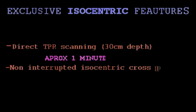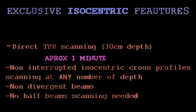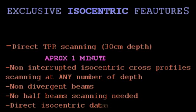Exclusive Isocentric Features: Direct TPR scanning 30 cm depth, approximately 1 minute, non-interrupted isocentric cross profile scanning at any number of depths, non-divergent beams, no half-beam scanning needed, direct isocentric data input into treatment planning.